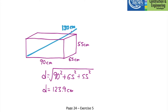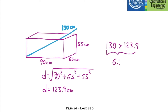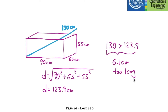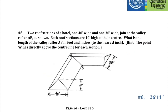Is 130 centimeters greater or less than 123.9? Clearly, it's too big — it doesn't fit in the box. So 130 is greater than 123.9, and the difference is 6.1 centimeters. The rod is 6.1 centimeters too long. The diagonal of the box is 123.9 centimeters, the rod doesn't fit, and it's 6.1 cm too long.